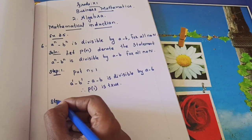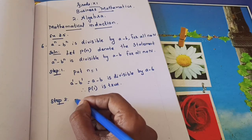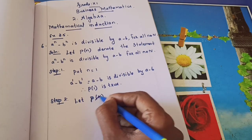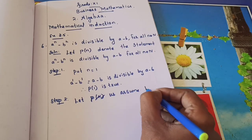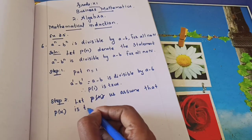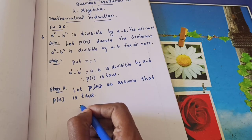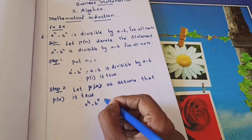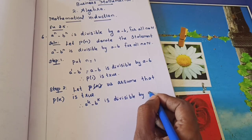Step 2: Let us assume that p(k) is true. Substituting k in place of n: aᵏ minus bᵏ is divisible by (a minus b). We are assuming this is true.